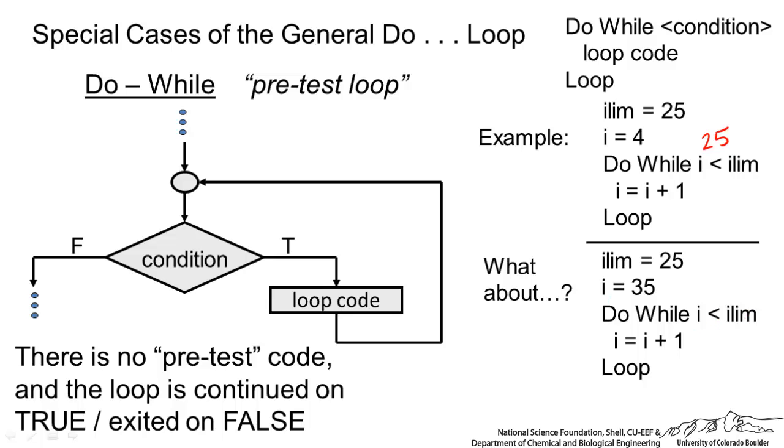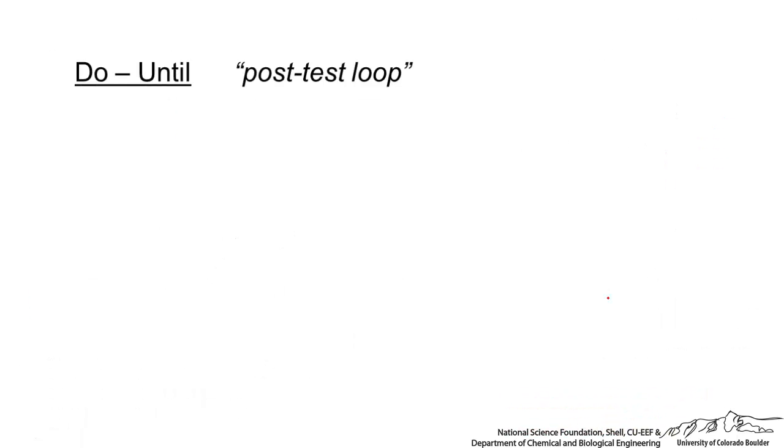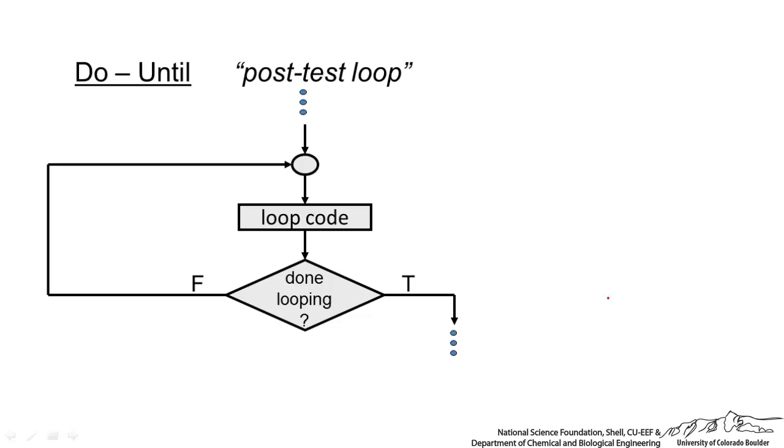There is also a do until and this is also known as a post-test loop where we have the test that is after code. Then you set it up as do and then you have loop code and you loop until a condition is met. This is continued on true. The do while is continued on false.